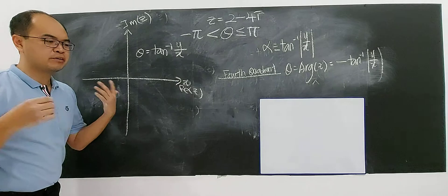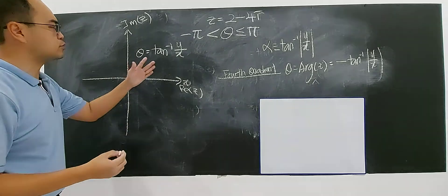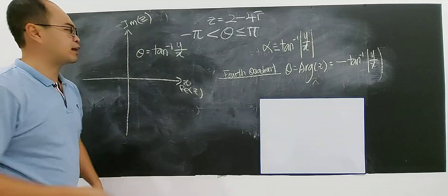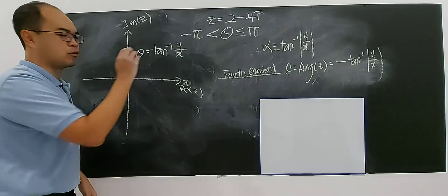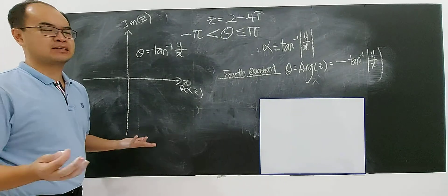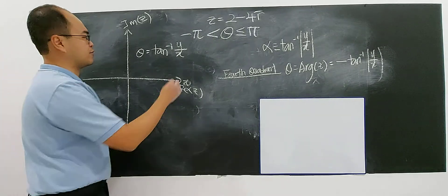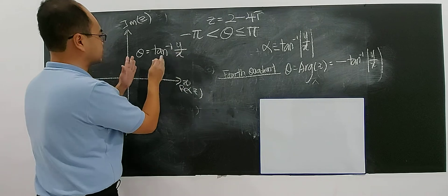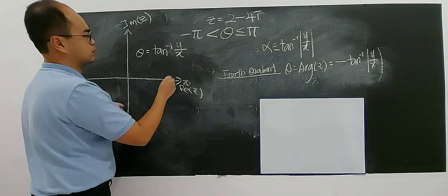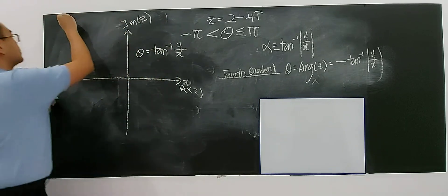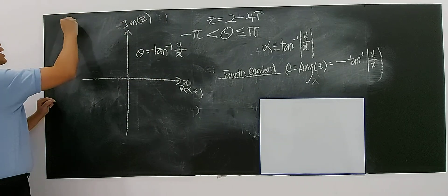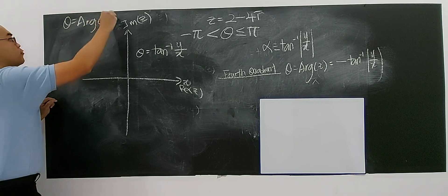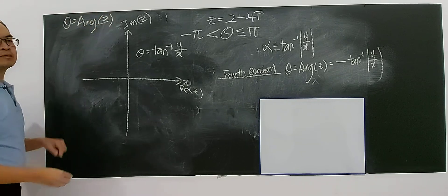But if you worry about confusing when to put modulus — I tell you, put modulus everywhere. Doesn't matter if you are easy to confuse. Theta is actually a short form for argument of z.